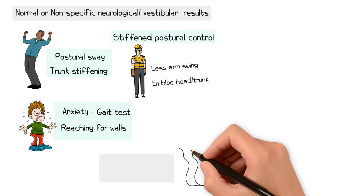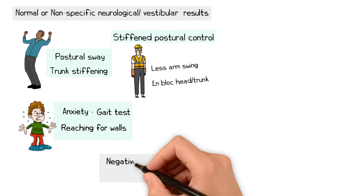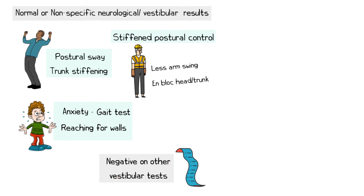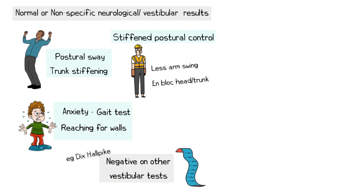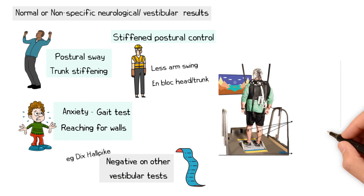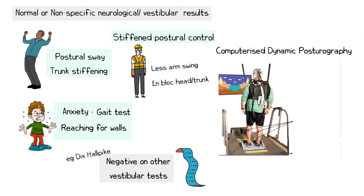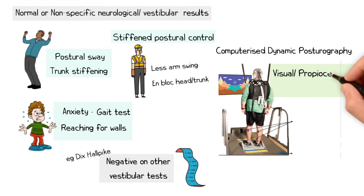Typically, you would see negative results on diagnostic tests for other vestibular disorders, such as the Dix-Hallpike test, and this would reinforce the diagnosis of 3PD. Computerised dynamic posturography would also demonstrate an over-reliance on visual and proprioceptive cues.